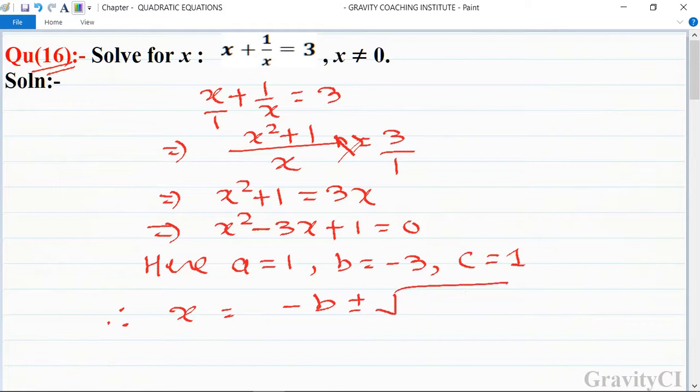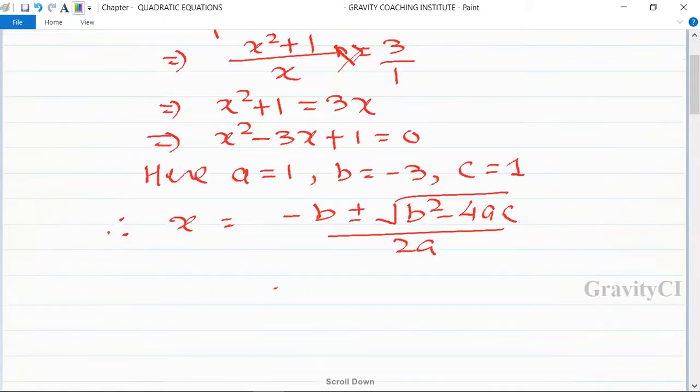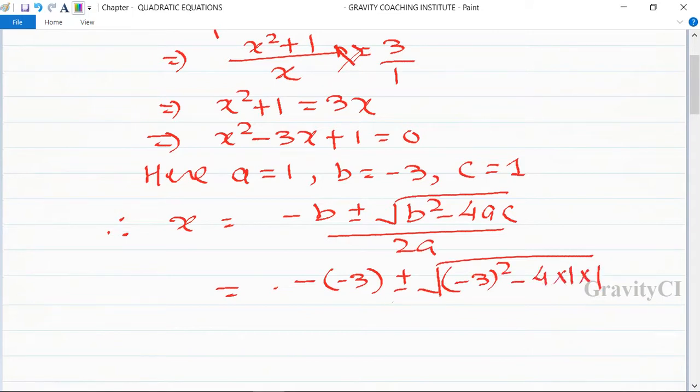So is equal to minus and minus 3 plus minus root under minus 3 whole squared minus 4 into 1 into 1 upon 2 into 1. So is equal to 3 plus minus root under 9 minus 4 upon 2.